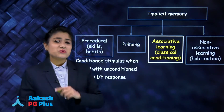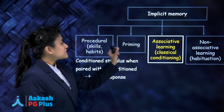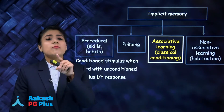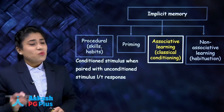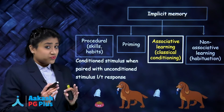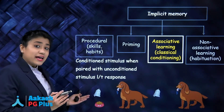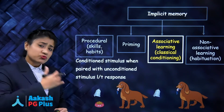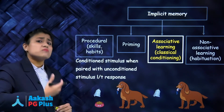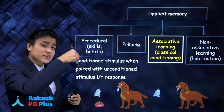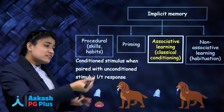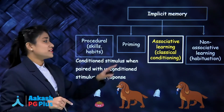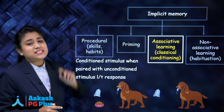Next is associative learning. A good example is classical conditioning, demonstrated by Pavlov's experiment. If you give food and a bell at the same time to a dog, the dog starts salivating. After repeating this 100 or more times, if you ring the bell without any food, the dog still starts salivating. This is classical conditioning, which comes under associative learning and implicit memory.